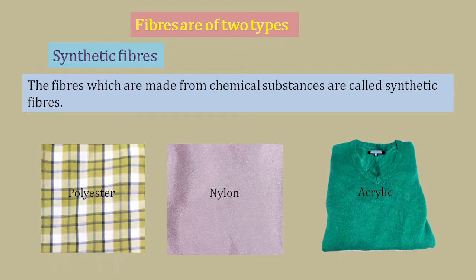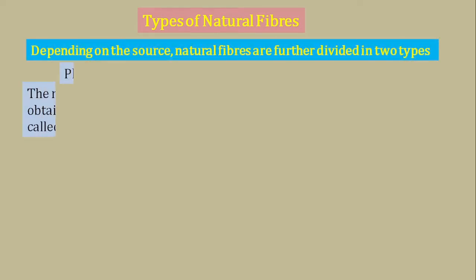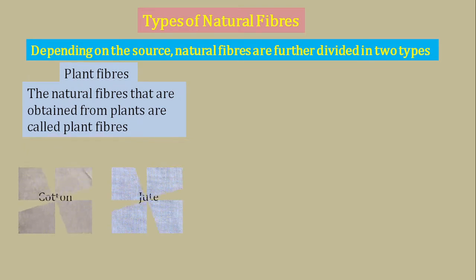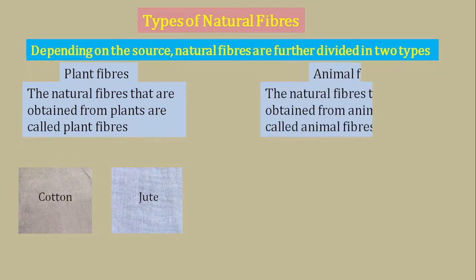Out of these two types of fibers, natural fibers are further divided into two parts. First, plant fibers — the natural fibers that are obtained from plants are called plant fibers. Cotton and jute are obtained from plants, so these are plant fibers. Second, animal fibers — those natural fibers that are obtained from animals are called animal fibers.